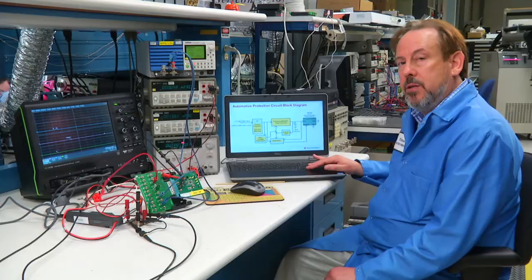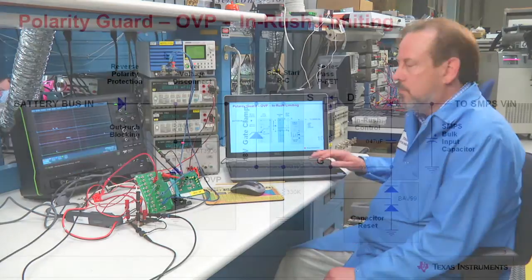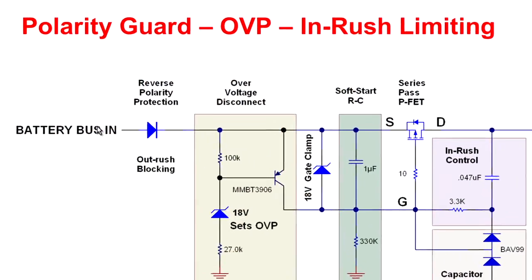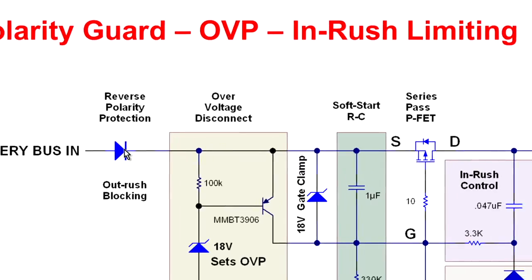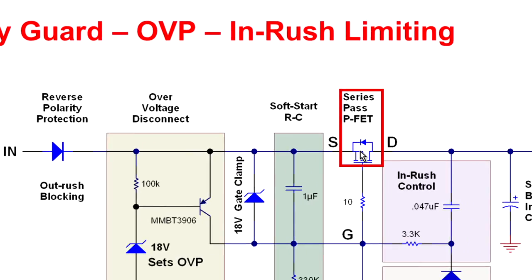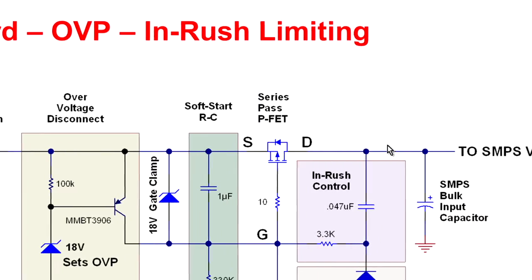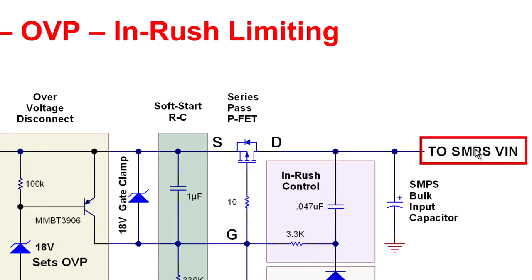So let's look at that application circuit in detail. Schematically, we've got the battery bus on the left-hand side, the polarity guard diode that we've discussed previously. Here toward the right is the series pass MOSFET, and then the output is the switching mode power supply that is sitting downstream and not shown in this diagram.